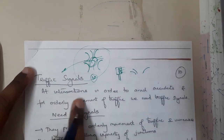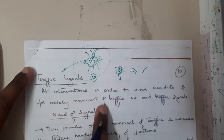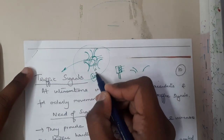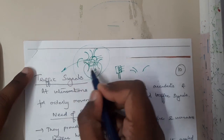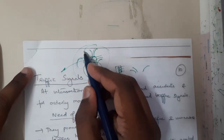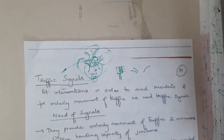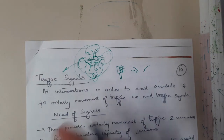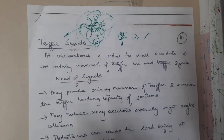At intersections, signals help avoid accidents and ensure orderly movement of traffic. Each vehicle will go in a particular order — for this lane we give 20 seconds, for this one 30 seconds, then 20 again, then 30. In this way, traffic moves in a particular order, and vehicles must follow this rule because it is mandatory.